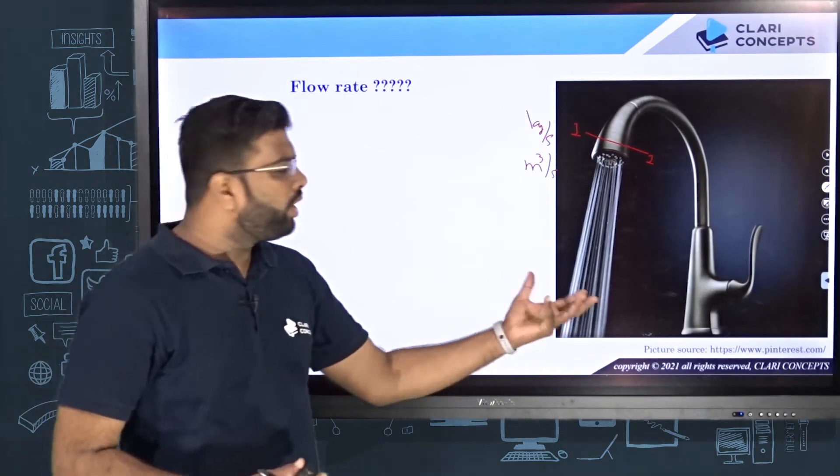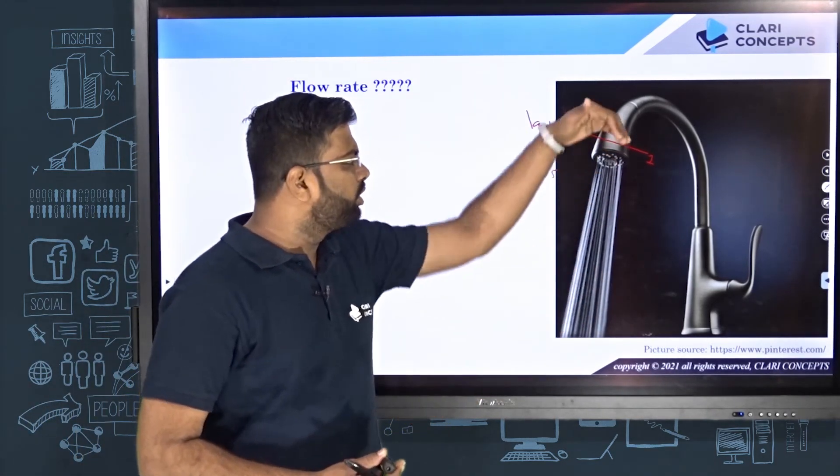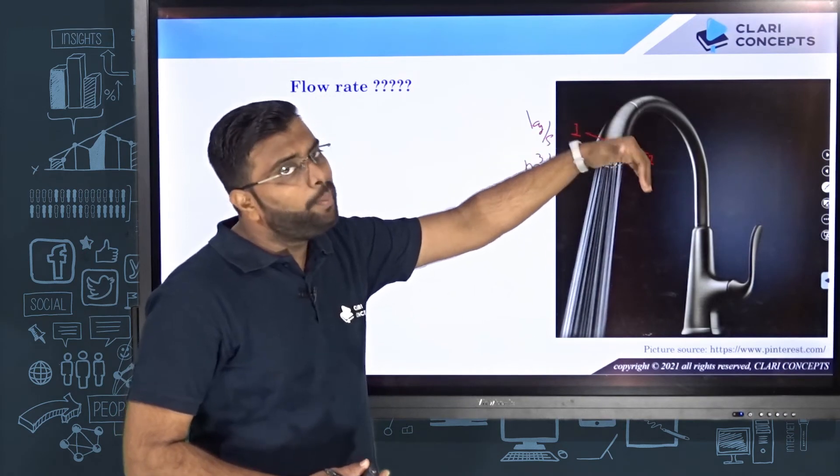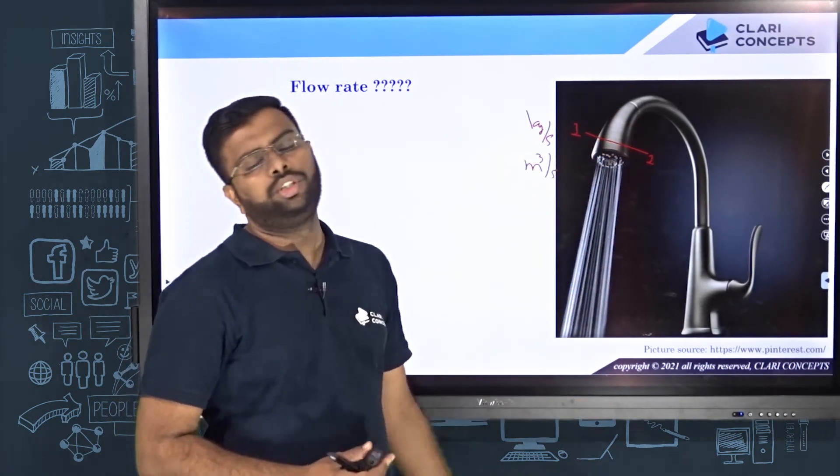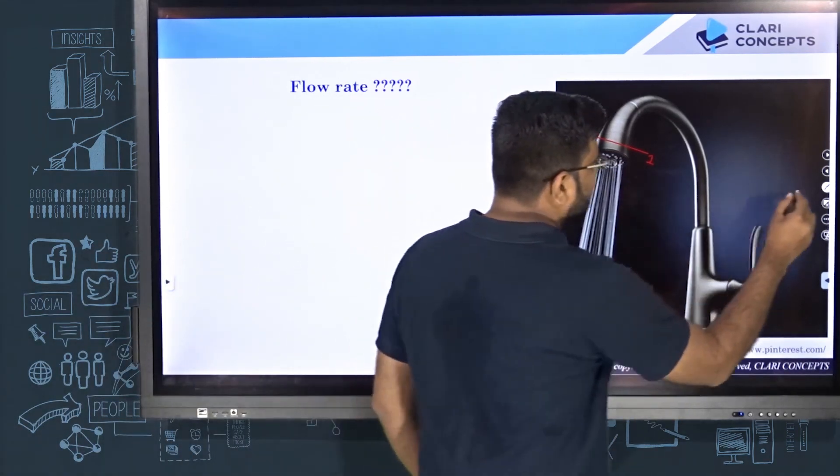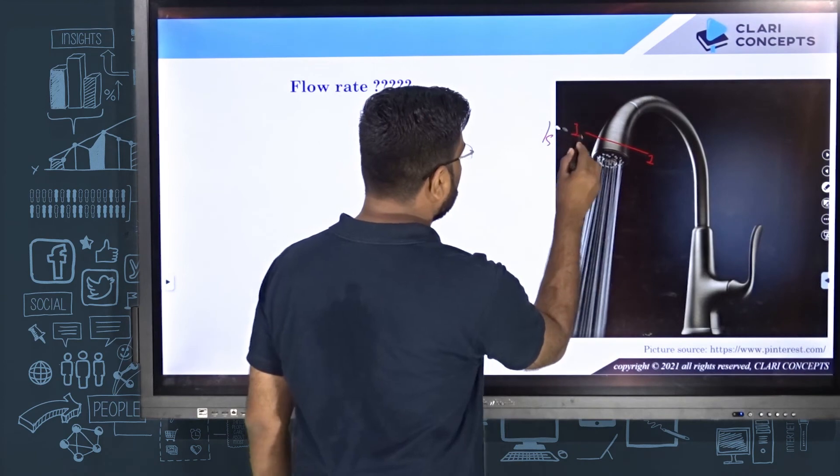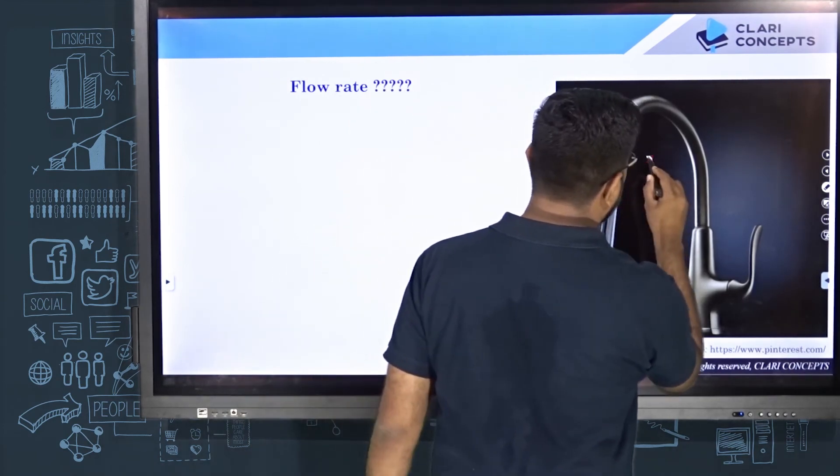Now my question is, how do you measure that? How will you make sure that how much quantity of water is flowing through this section, or rather, how much quantity of water is coming out through this tap in every second? Let me give you an experiment today.